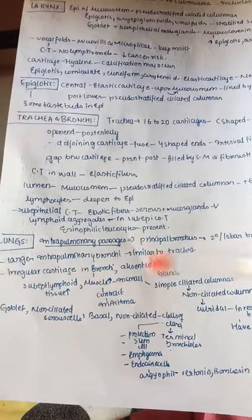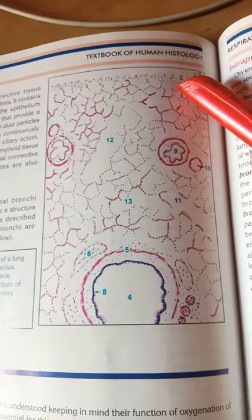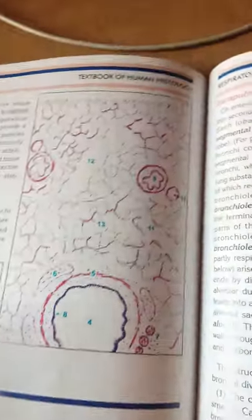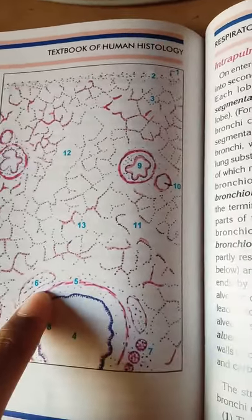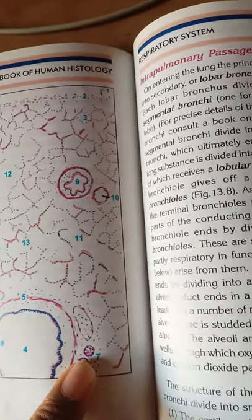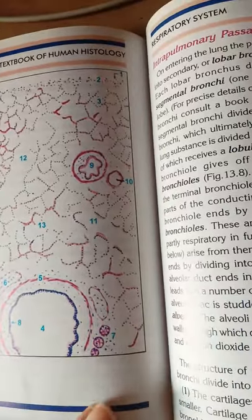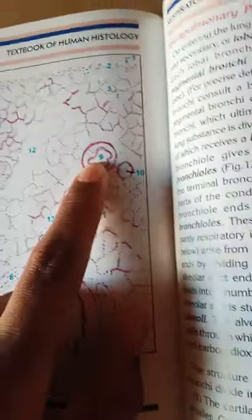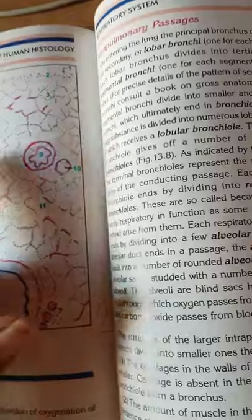Now let us start with the lungs. In the histological picture of the lung: one and two are the pleura, three is the alveolus, four is the bronchus, five is smooth muscle, six is cartilage, seven are glands, eight is the bronchial epithelium, nine is the bronchiole, ten is the artery, eleven is the respiratory bronchiole, twelve is the alveolar duct, thirteen is the atrium of the alveolus.